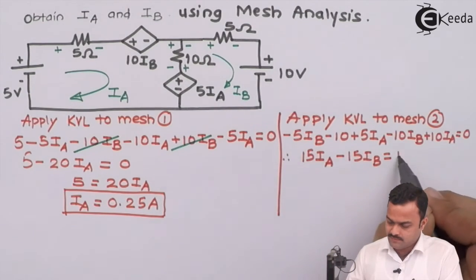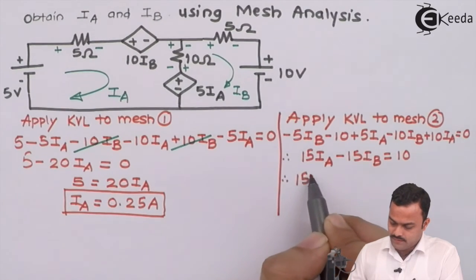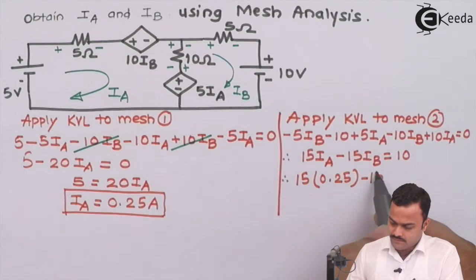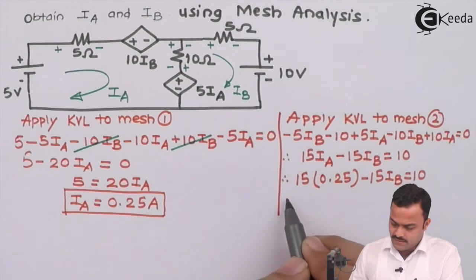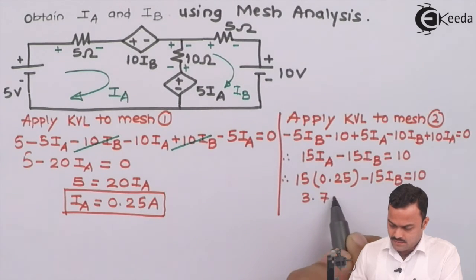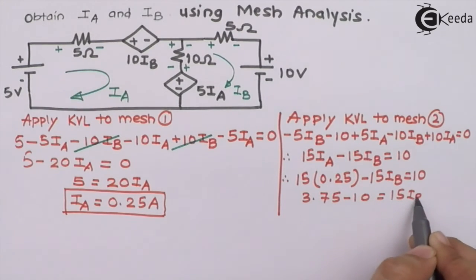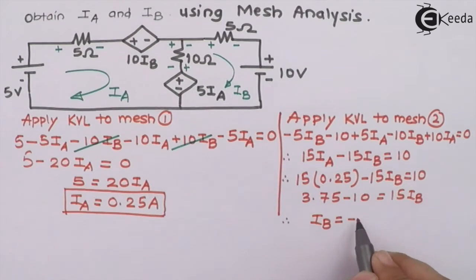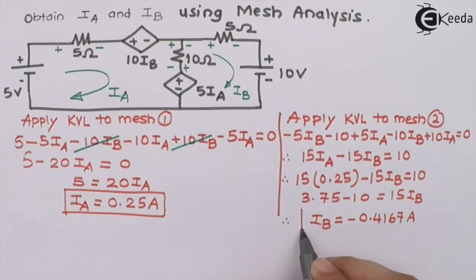The minus 10 on the left-hand side moves to the right side as plus 10. We already calculated Ia, so substituting: 15 × 0.25 minus 15·Ib = 10. Simplifying: 3.75 minus 10 = 15·Ib, giving Ib = minus 0.4167 ampere.